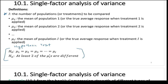The null assumes all treatments affect the population the same way. The alternative is that at least two of the means are different from each other. You might have just one that's different from the rest, or all of them could be different. From the data it usually suggests which one it is, but we just say at least two means are different.